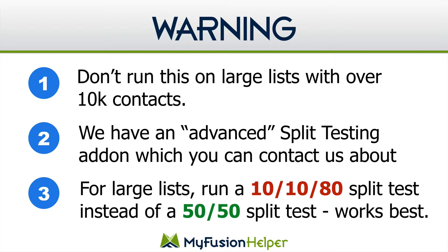It really is still a 50-50 split test — it's just that we divide your list into the first 20% of your list. So let's say you have 50,000 people; we're only going to look at 10,000 of those people first. We take that first 20%, or that 10,000, and we split it up and do an A-B split test to two 5,000-person segments. When we get the results from that, we then send the remaining 80% to the winner. That's called a 10-10-80 split.